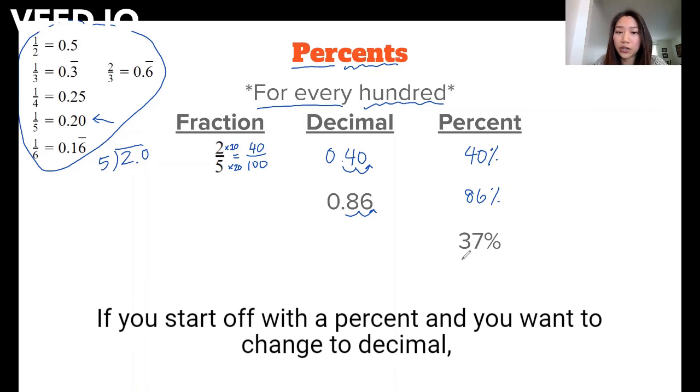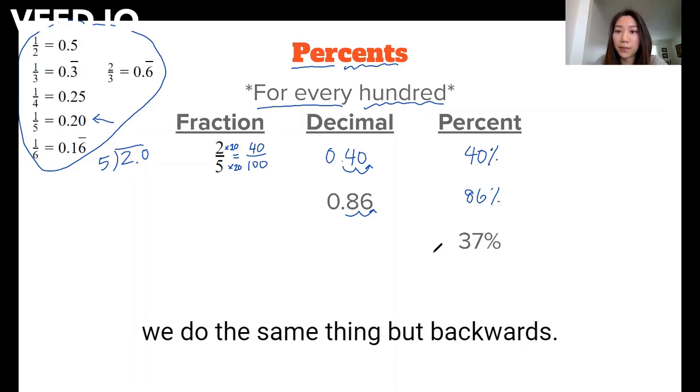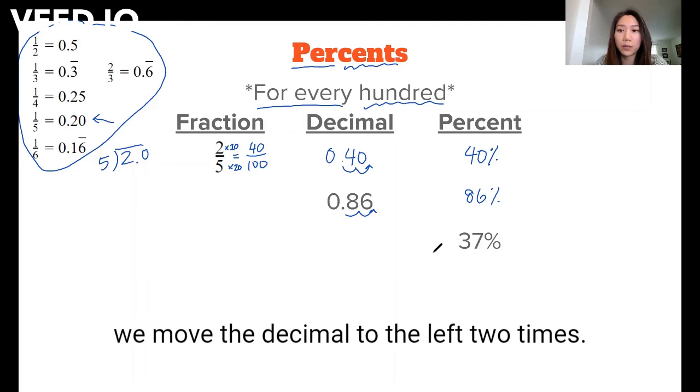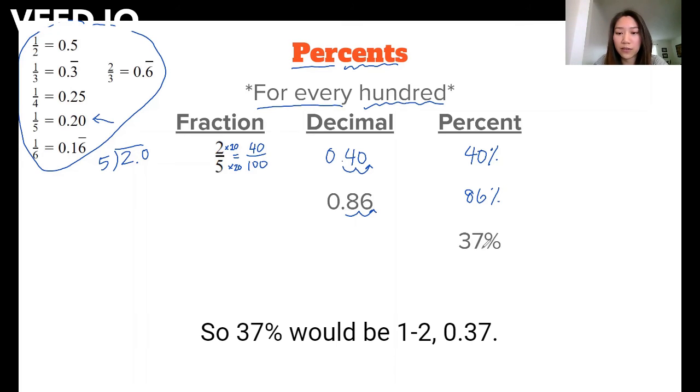If you start off with a percent and you want to change to decimal, we do the same thing but backwards. So instead of moving the decimal to the right two times, we move the decimal to the left two times. So 37% would be 1, 2, 0.37.